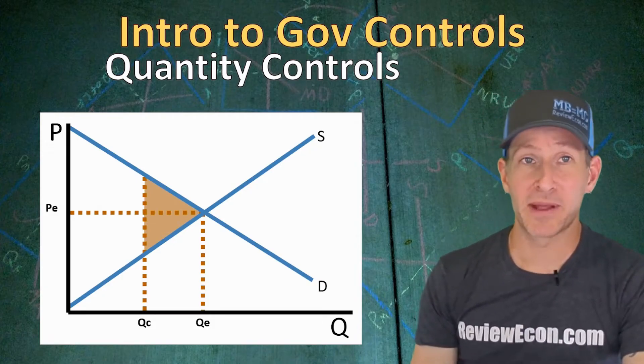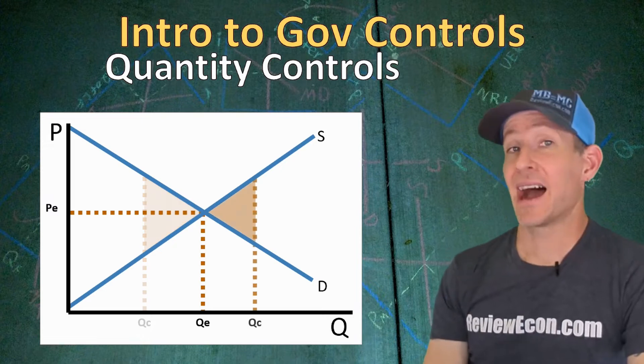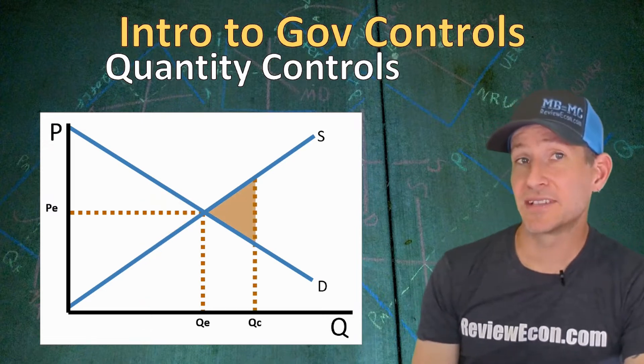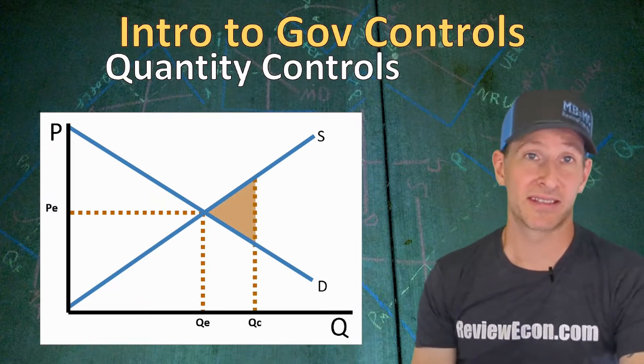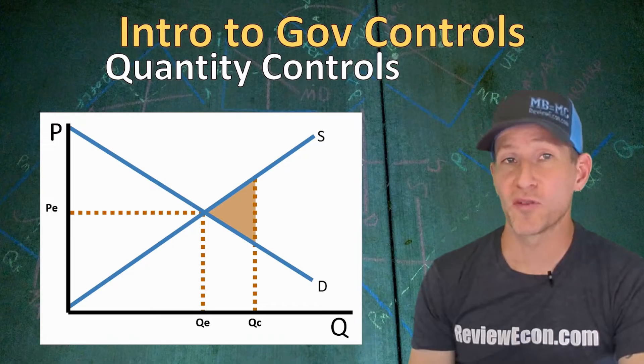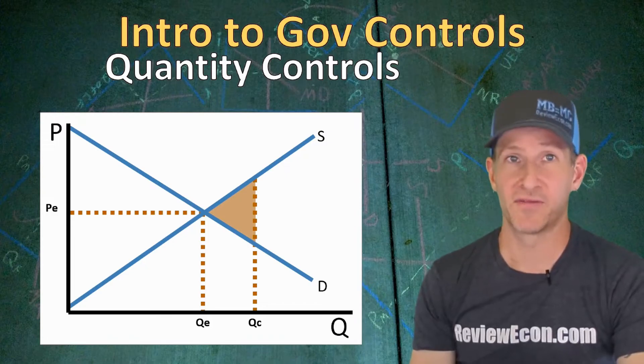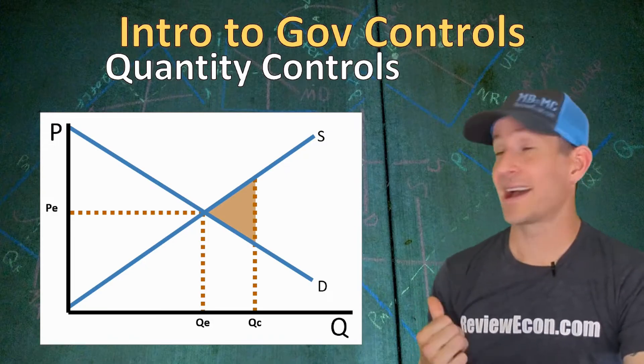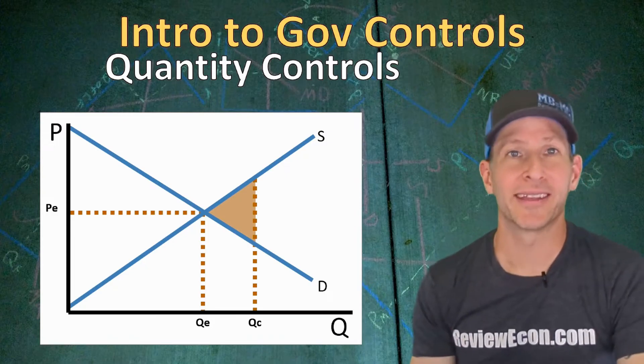And if the government were to mandate a higher quantity than the equilibrium quantity, we would again have deadweight loss, this time from overproduction of this product, and we would see it in that triangle right there.